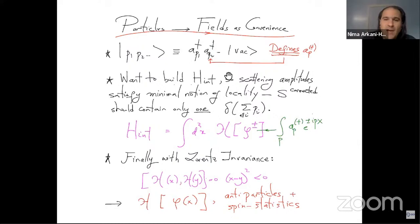we should build functions of position. These fields, five plus or minus out of a position that I make from taking linear combinations of the A's and the A's. So that's why fields are useful for describing the local interactions of particles.